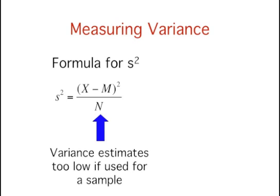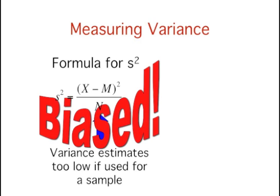We saw in the estimating variance simulation that if n is used in the formula to calculate variance in a sample, then the estimates tend to be too low. What does it mean if there is a tendency to underestimate or overestimate? You've got it. It's biased.